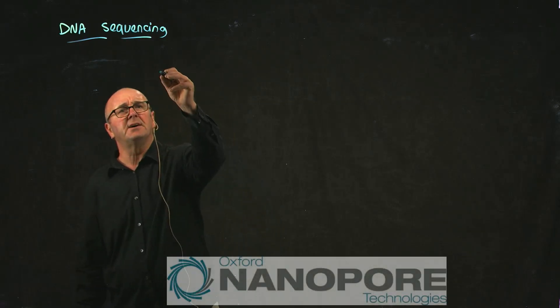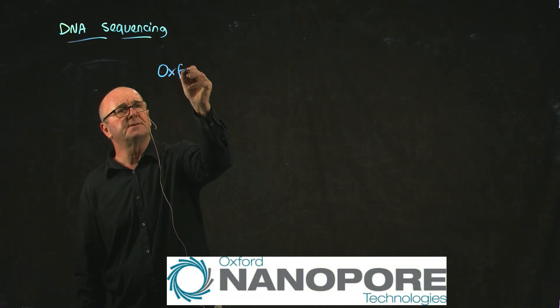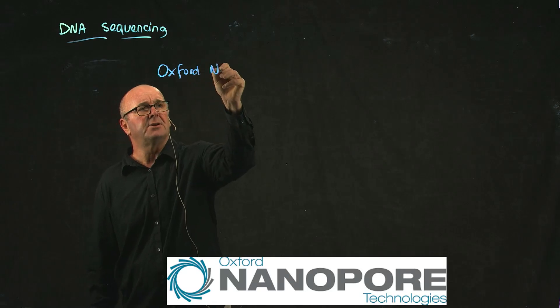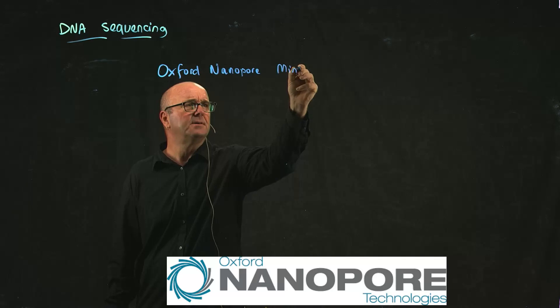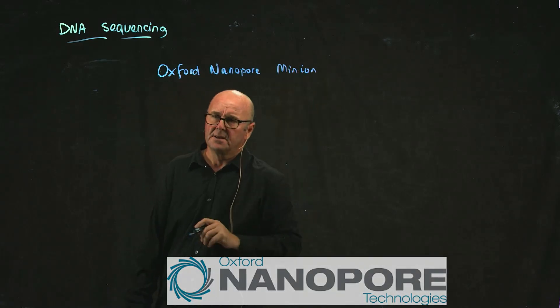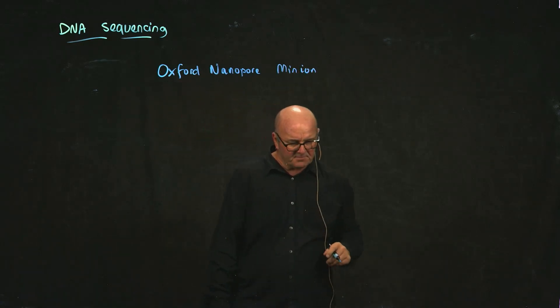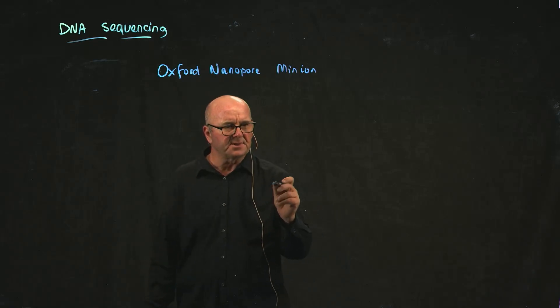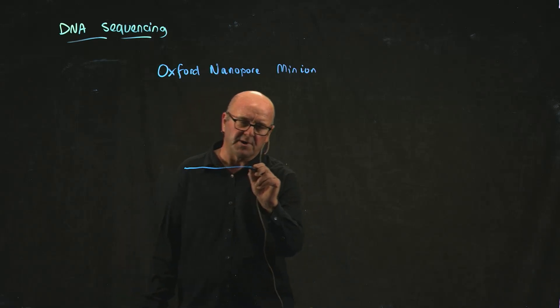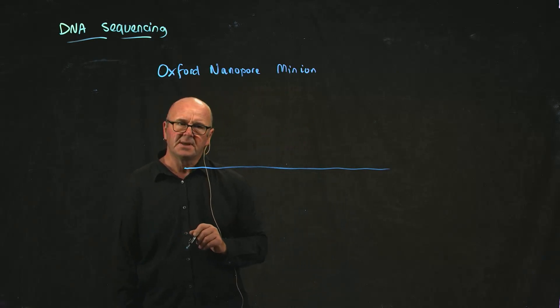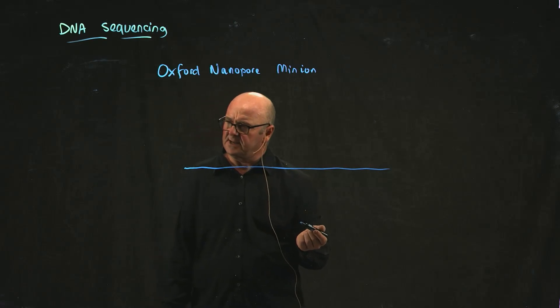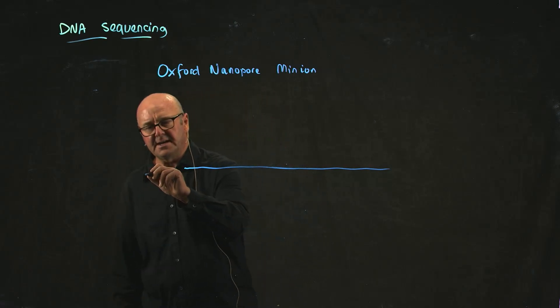The last of the technologies I want to tell you about is what's called the Oxford Nanopore MinION. This is called nanopore technology because the way that this sequencing works, instead of taking a piece of DNA, you create a membrane.